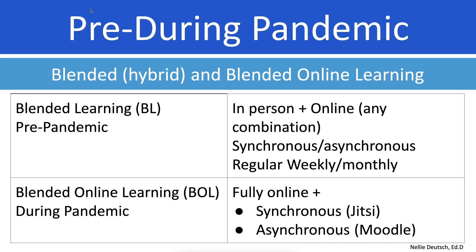The pre-pandemic was blended, and during the pandemic it was fully online. Some of the differences between hybrid or blended and fully online blended learning: blended learning combines face-to-face or in-person with an online component. This could be a live online class, emailing, messaging systems, Facebook or other LMSs such as Moodle, Canva, or Blackboard. It's in-person and any kind of online combination with both synchronous and asynchronous.